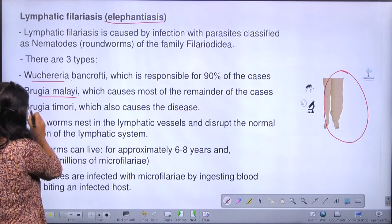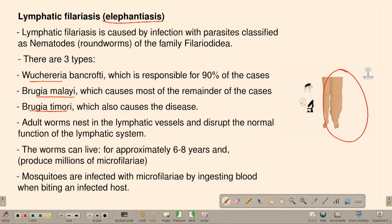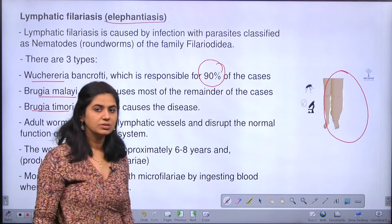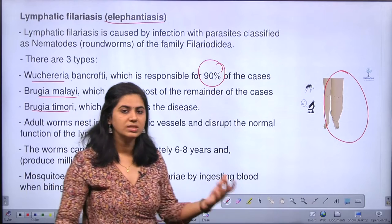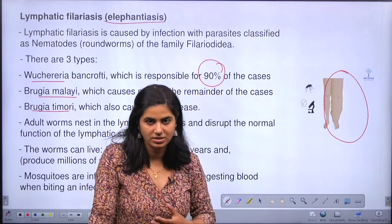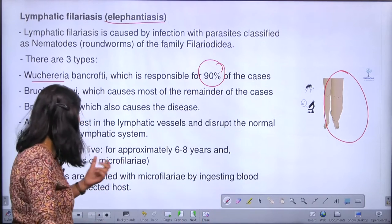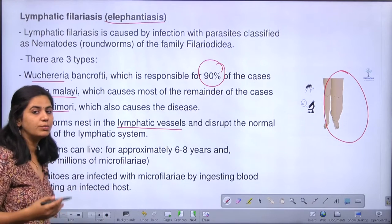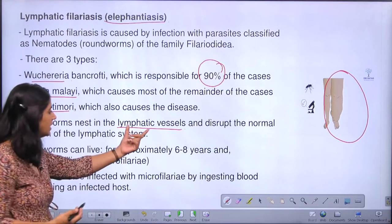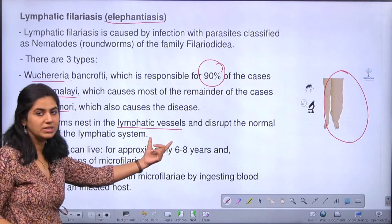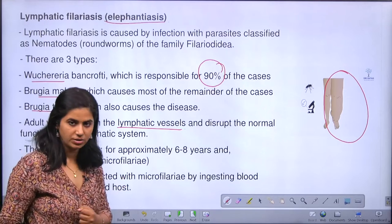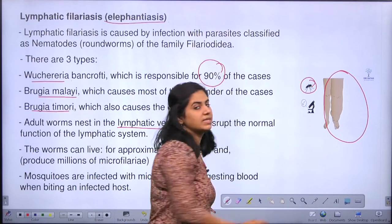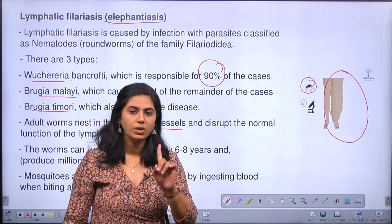Among these nematodes, Wuchereria causes 90% of the cases. They cause elephantiasis or filariasis by interrupting the lymphatic vessels — the adult worm nests inside the lymphatic vessel and disrupts its normal function. A mosquito acts as a vector in transmitting this disease.